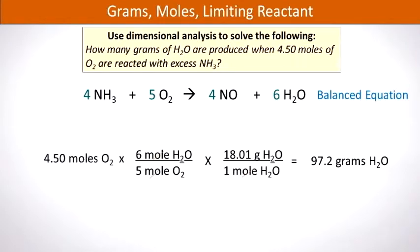Let's try another example. How many grams of water are produced when 4.5 moles of oxygen are reacted with excess ammonia? Since the limiting reactant is the reactant that is not in excess, by default oxygen is the limiting reactant in this reaction because it is what limits the quantity of product that can be produced.